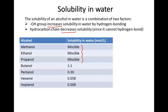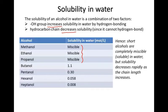However, once we get up to butanol with a four-carbon chain, the effect of that nonpolar carbon chain begins to dominate, and the solubility decreases pretty quickly. Butanol has a solubility of 1.1 moles per litre, and adding an extra carbon to get to pentanol decreases it down to 0.3, and so on.